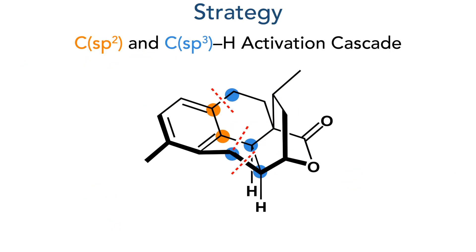To synthesise these compounds, the researchers would first construct the polycyclic core and then introduce the oxidation using established methodologies. To do this, they would utilise a novel reaction cascade involving the sequential C–H activation of both the SP2 and SP3 centres to form three bonds in just one reaction. This would be done using palladium catalysis and norbornene to shuttle the palladium between different reacting centres.